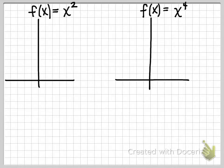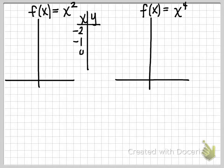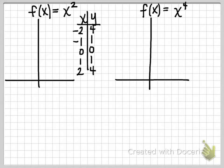We'll start by analyzing the two functions numerically, meaning we'll make a quick table of values. Negative 2 squared gives us positive 4, negative 1 squared is positive 1, and then we get 0, 1, and 4 for the other outputs. When we plot those points, there's no surprise in what this parabola looks like.